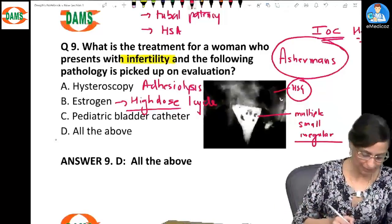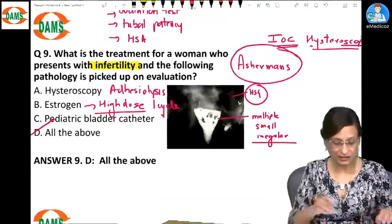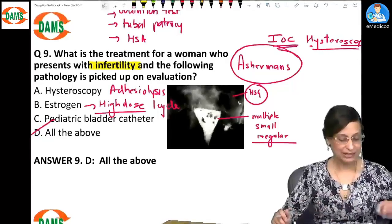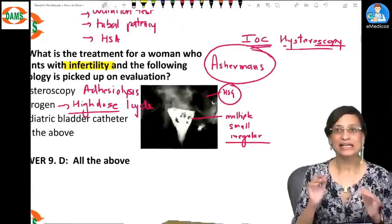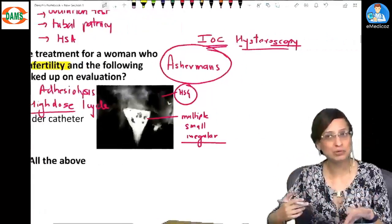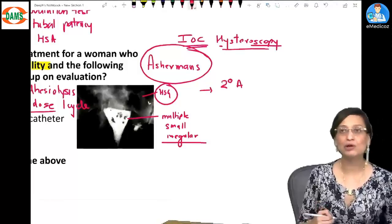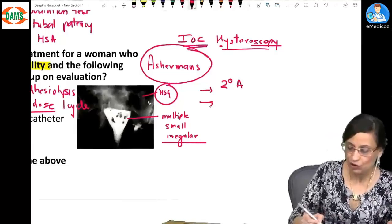So we are going to do all the above here. Now quickly tell me, further questions. Asherman syndrome will present with primary amenorrhea or secondary amenorrhea? So very very important AIMS MCQ, multiple completion type questions. So you have to know that this presents as secondary amenorrhea, not primary.